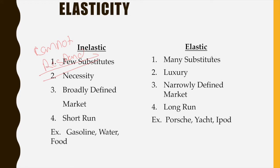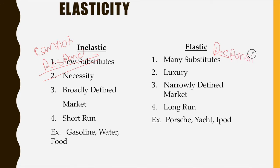Elastic demand applies to products that have many substitutes. It's a luxury — not something you have to have. It's generally considered a narrowly defined market, and we're dealing with a long period of time. Examples might include a Porsche, a yacht, or an iPhone. When a product is elastic, the consumer is very responsive — changes in price really motivate them to buy more or less of the good.